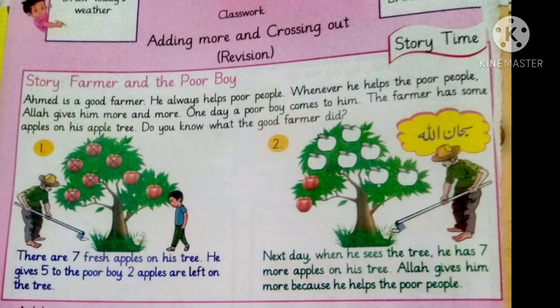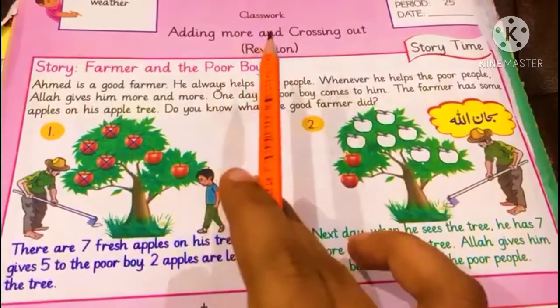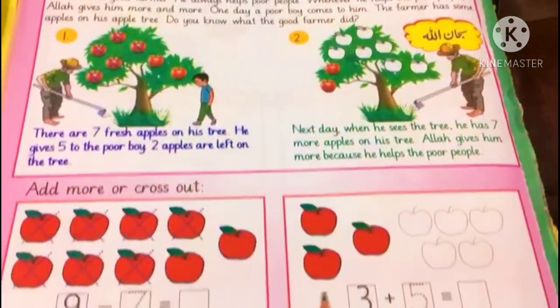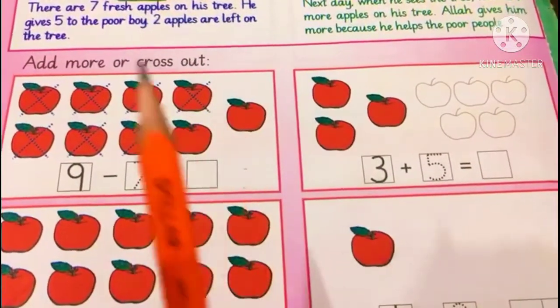So students, we should help each other so that we can make Allah happy. After doing this story, we will do the work on workbook. So let's start. We are going to revise adding more and crossing out on page number 25.